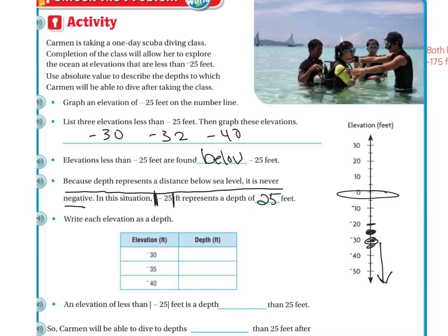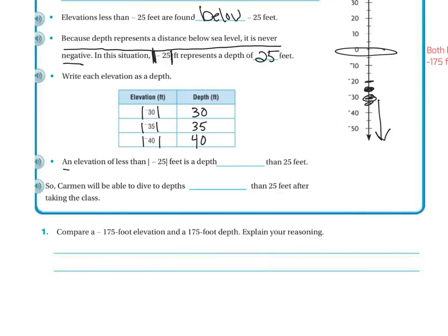So write each depth elevation as a depth. If we have negative 30, the absolute value of negative 30 is going to be 30. The absolute value of negative 35 is going to be 35. The absolute value of negative 40 is going to be 40. So an elevation of less than the absolute value of negative 25 is going to be a depth that is greater than 25 feet. So Carmen will be able to dive to depths that are greater than 25 feet after taking the class.